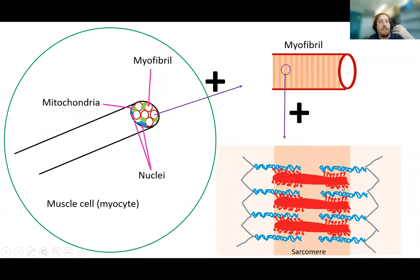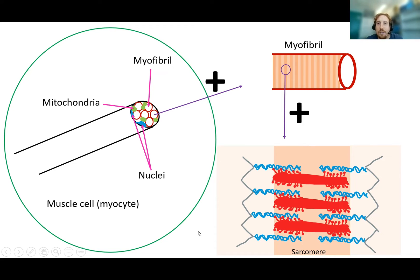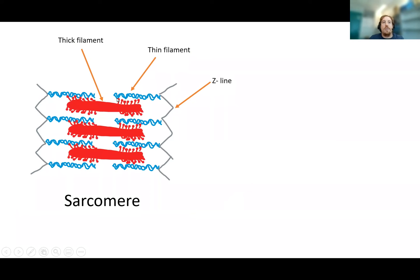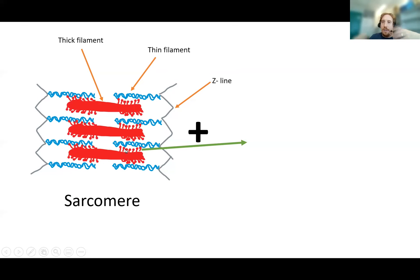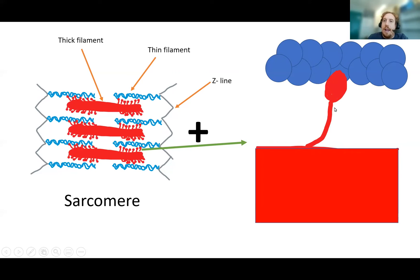The sarcomere is the functional unit of skeletal muscle — this is where the actual contraction and force generation occurs. That's because of thick filaments in red interacting with thin filaments, causing the thin filaments to slide over them. The thick filament and thin filament are separated by the Z-line, which acts as a border between different sarcomeres. The thick filament is a bundle of a few hundred of a protein called myosin, and this myosin has a globular head.